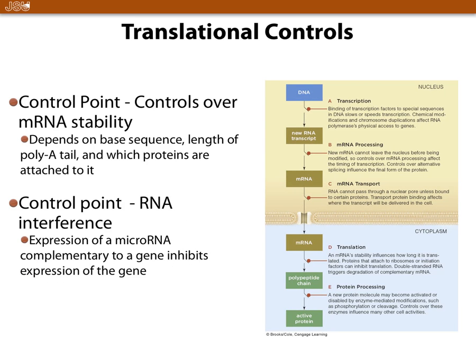Another control point — point D — is mRNA stability. mRNA is inherently unstable; it can degrade very easily. The cell increases its lifespan by adding a stretch of A's on its tail, called the poly-A tail. The cell can control how long that tail is. Think of it as a sacrificial sequence: the longer it is, the longer the RNA will last and the more protein it makes. The shorter that tail, the shorter the time that RNA lasts, and the less protein it makes.